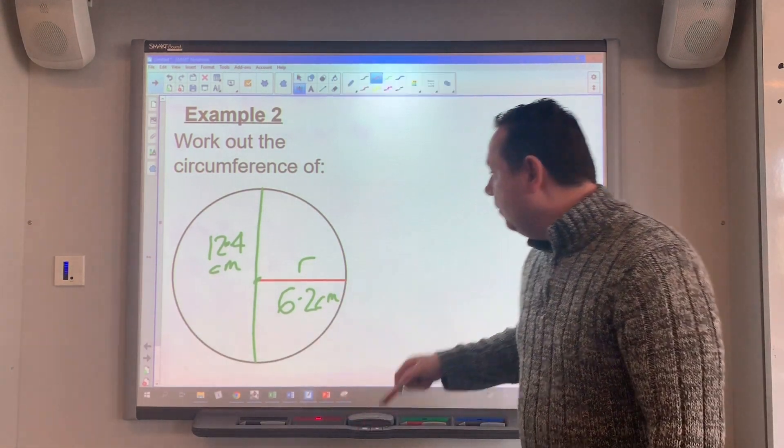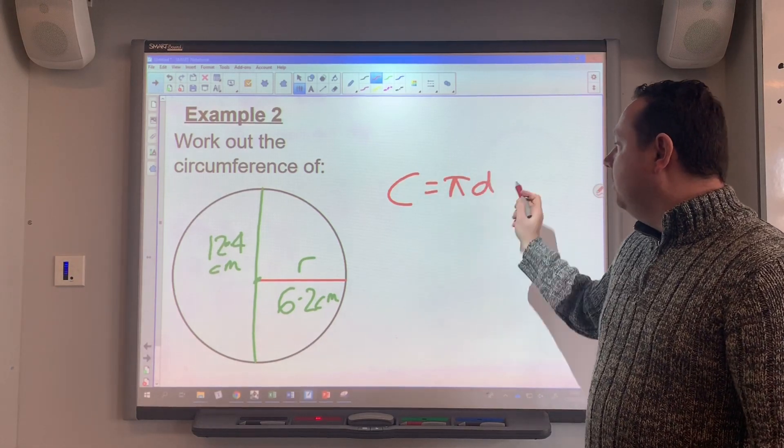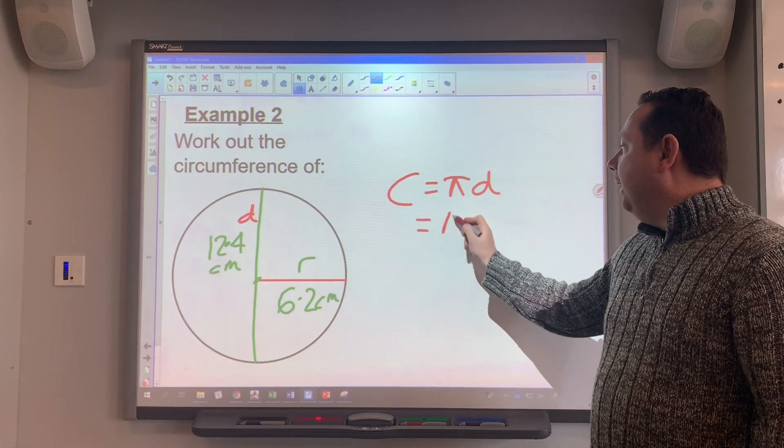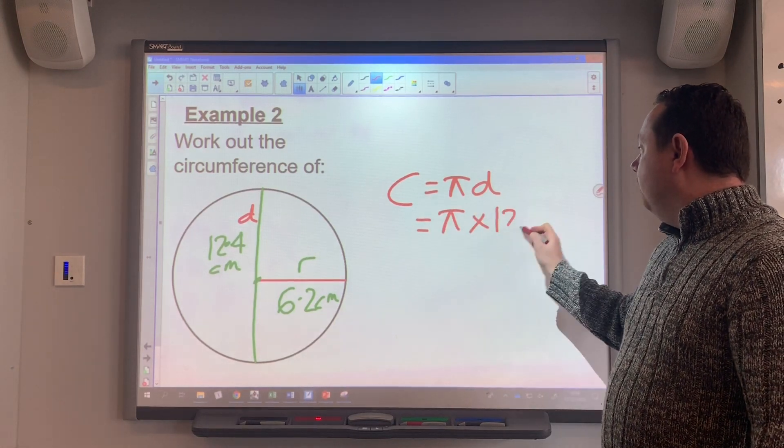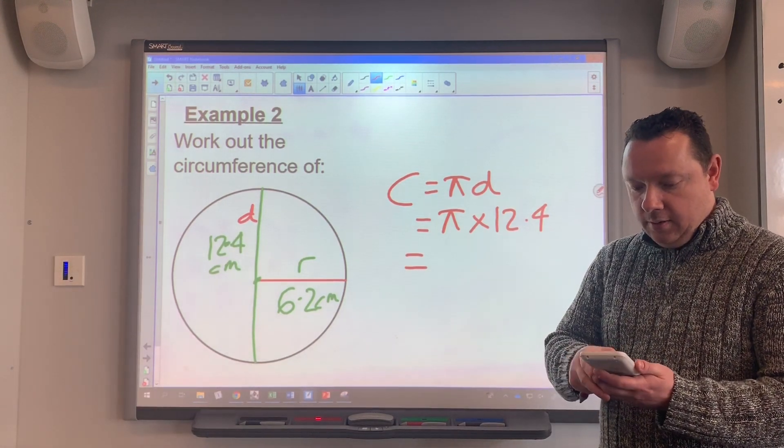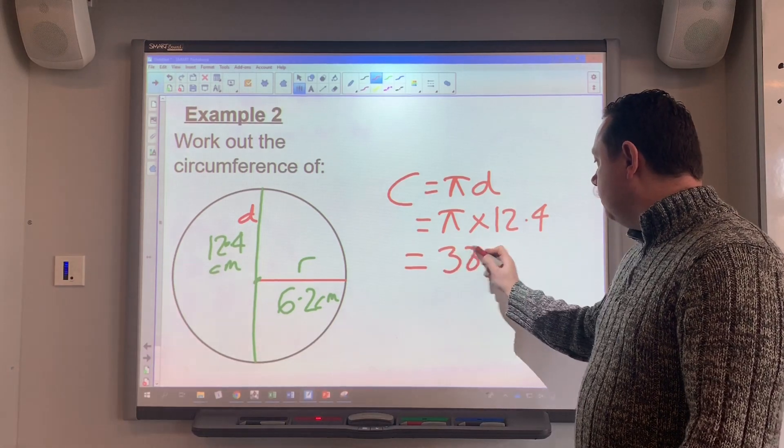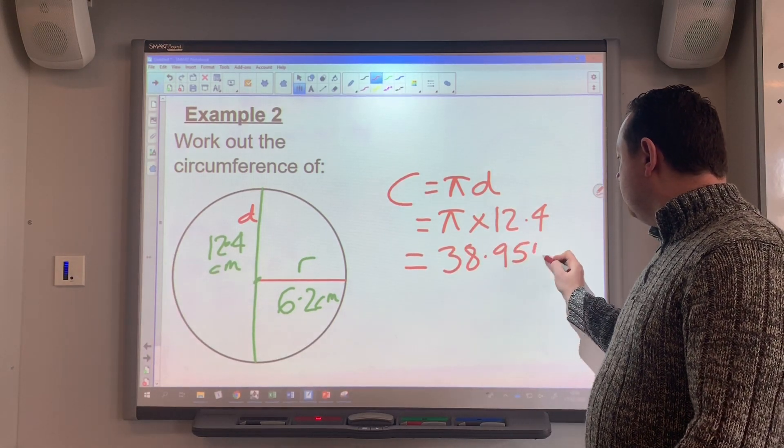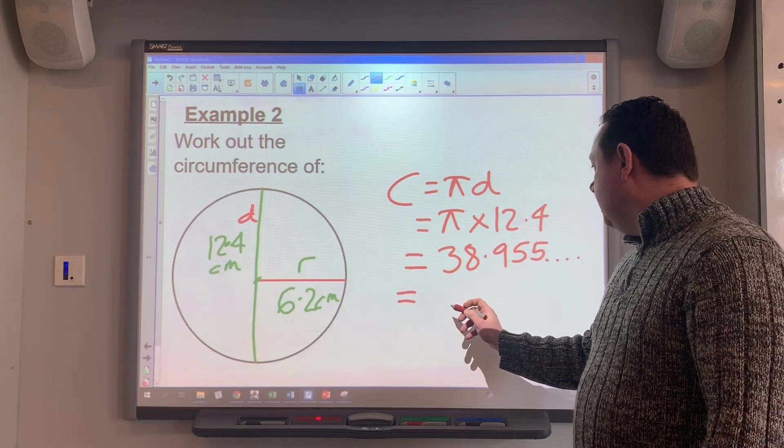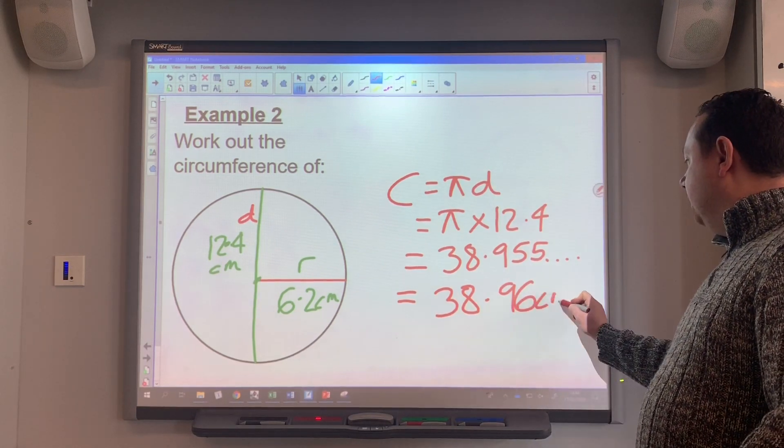Okay, so I'll write down my formula: C equals pi times diameter. So that's pi times 12.4, and I get my calculator and work that out. So that's 38.955, which to one decimal place... I'll just do it to two this time to save any problems rounding it: 38.96 centimeters.